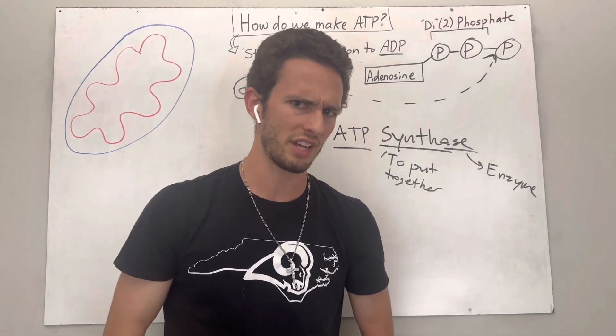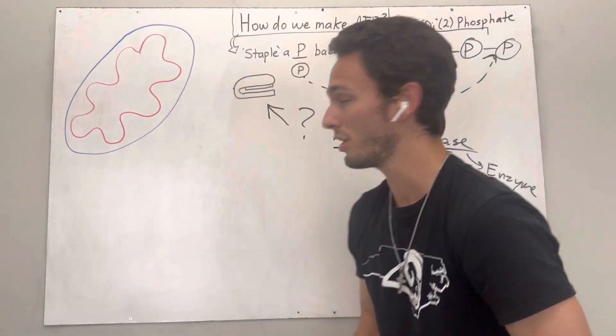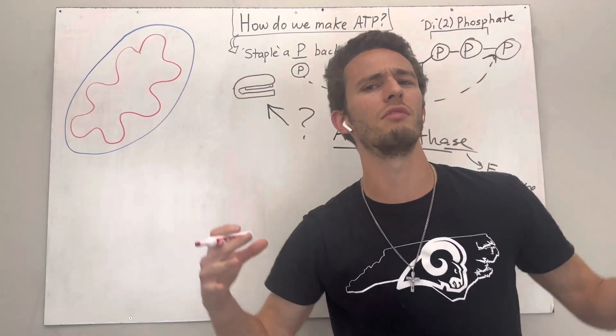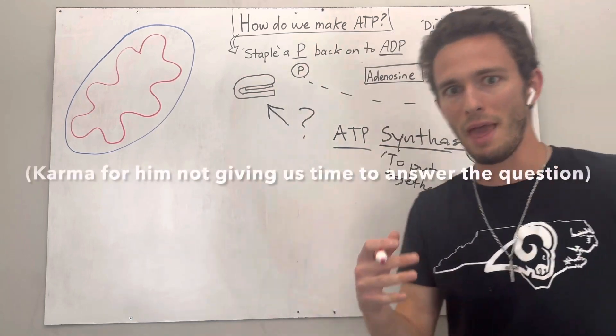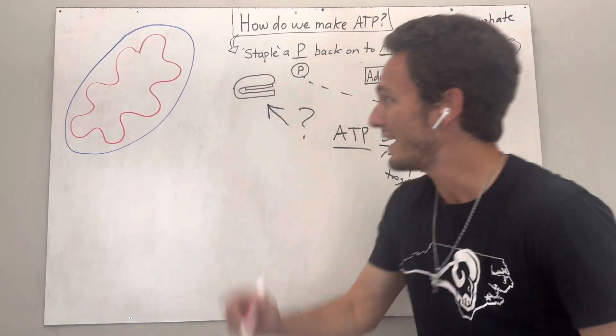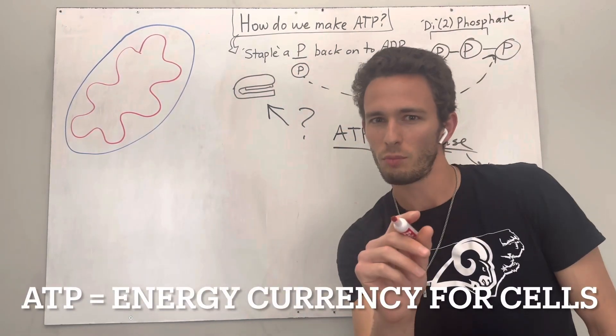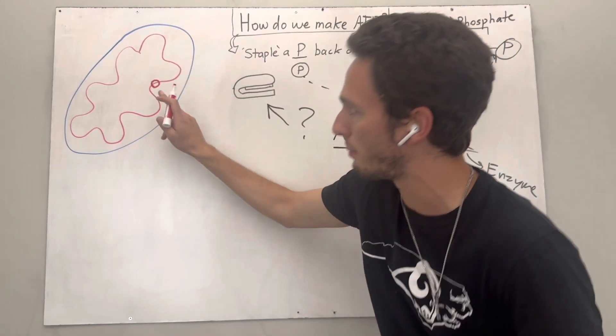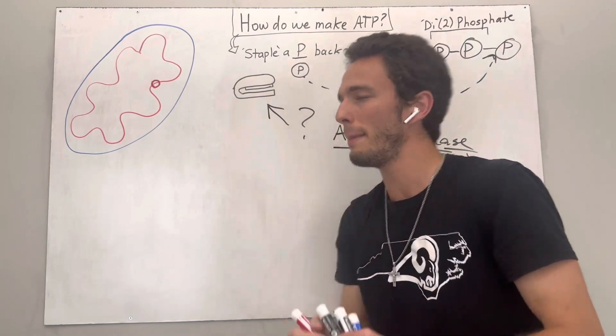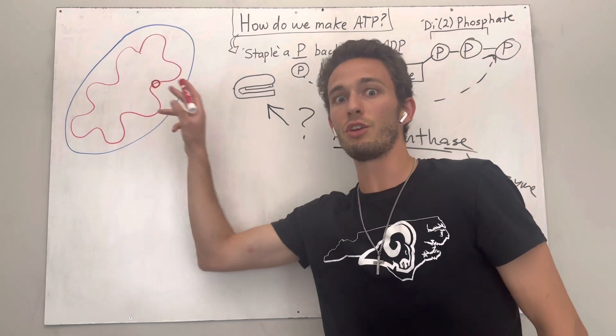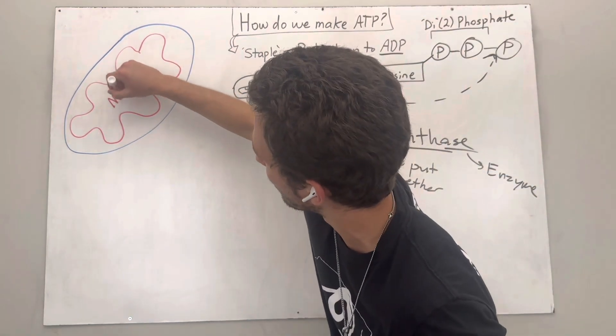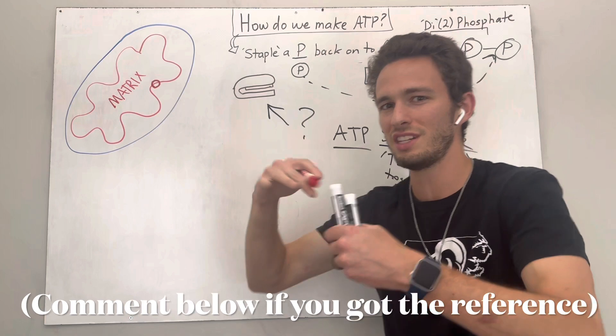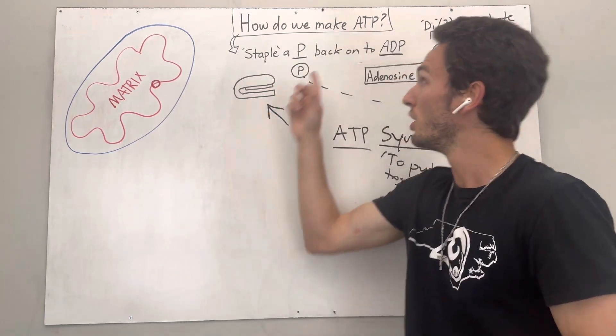Well, where do you think this stapler resides? You're probably right if you answer the mitochondria. So this is the mitochondria, a little organelle inside your cells, and it is called the powerhouse of the cell. Why is it called the powerhouse of the cell? Because it makes ATP molecules. We need to get more specific though. This ATP synthase, the stapler, is actually going to reside in what's called the inner membrane of the mitochondria. You see, this mitochondria has two membranes. It's got an outer membrane in blue, and it's got an inner membrane in red. And the space inside is actually called the matrix.